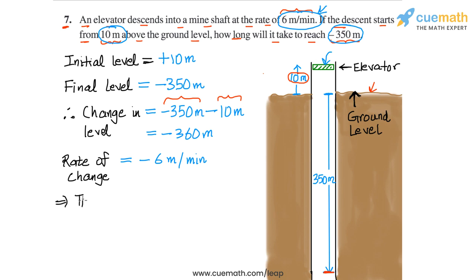And from here, we can say that the time of descent, the time which the elevator takes to go from plus 10 meters to minus 350 meters, will be equal to the change divided by the rate of change. So the total change is minus 360 meters, and the rate of change is minus 6 meters per minute. So this is how we can calculate the time.